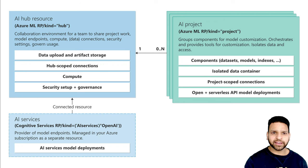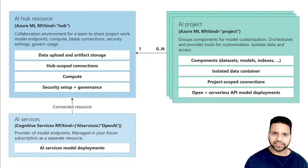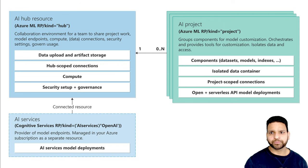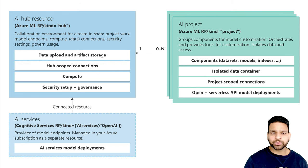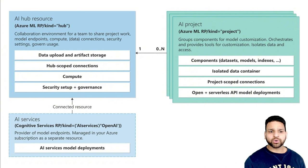All resources in the AI Hub can be shared by different projects. Projects are separate environments — every project is a single entity, but all projects are integrated with AI Hub resources. Resources like datasets, connections, and compute created inside a project cannot be used by another project, but Hub resources can be used by all projects. AI Studio also provides AI services with main AI capabilities.